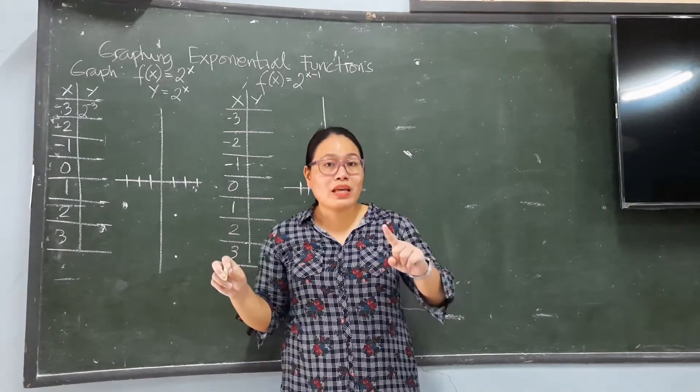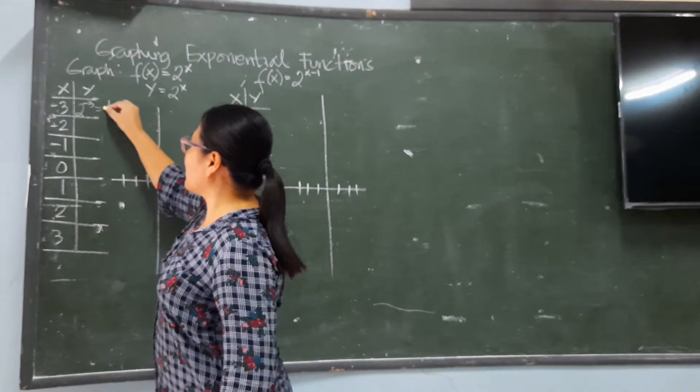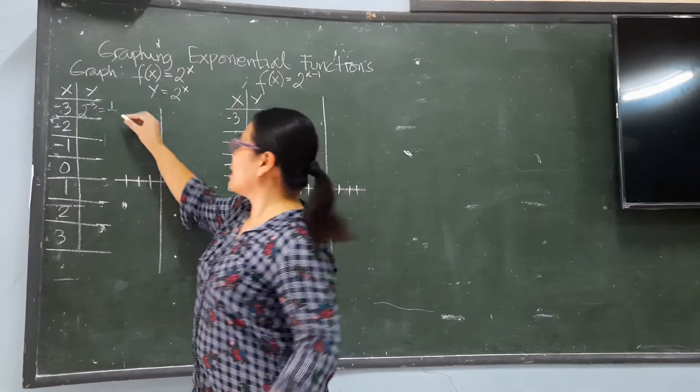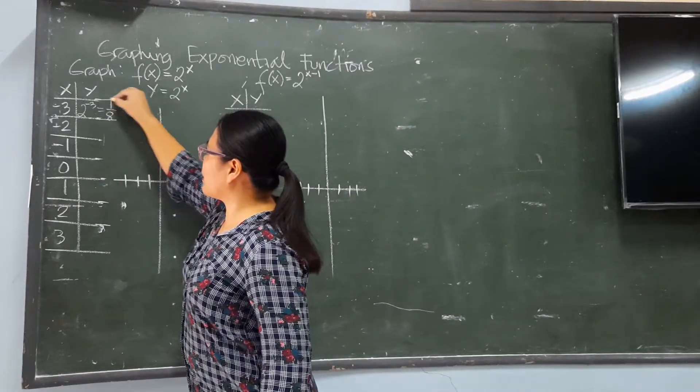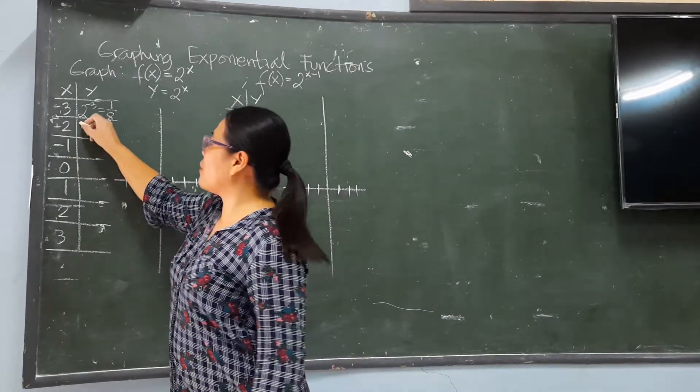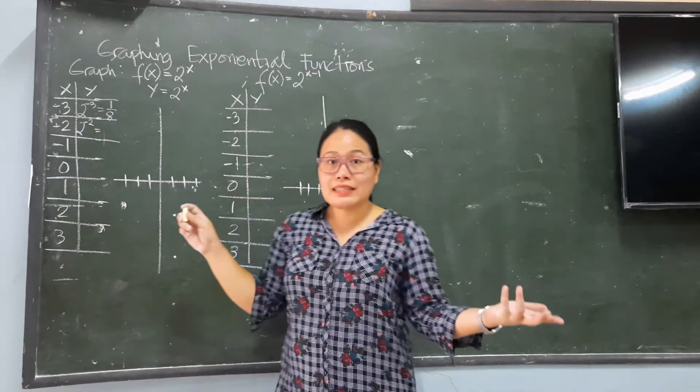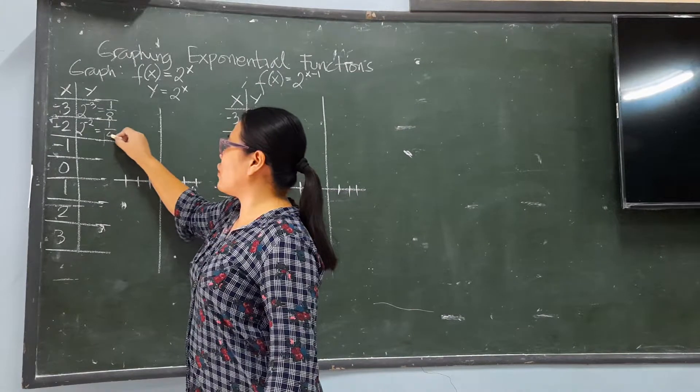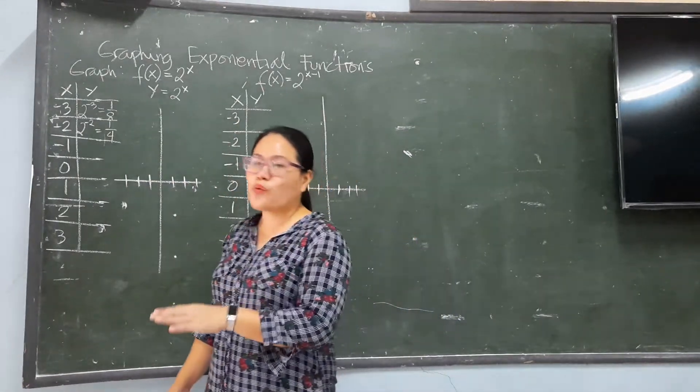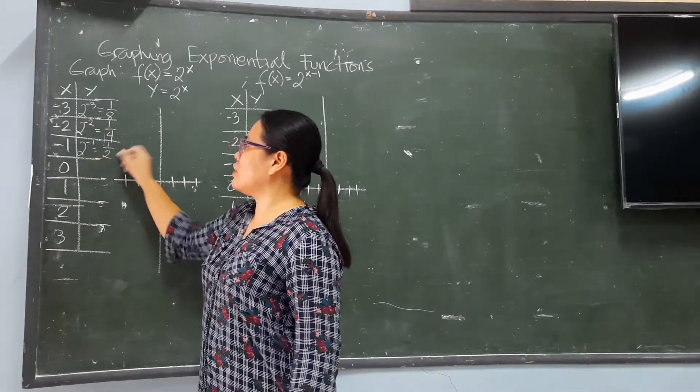Remember, negative exponent is a no-no. So, you put it down. That becomes 1 over what is 2 cubed? 2 times 2 times 2, it is 8. So, 1 over 8. That's the first one. The second one, 2 to the power of negative 2. And, since the exponent is still negative, you place it down 1 over 4. Because 2 times 2, it is 4 or 2 squared. The third, 2 negative 1, it is 1 over 2, 1 half.